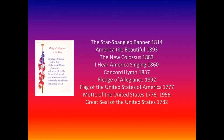The phrase 'under God' was added to the pledge by another act of Congress on June 14, 1954. Upon signing the legislation, President Dwight D. Eisenhower said, 'In this way we are reaffirming the transcendence of religious faith in America's heritage and future. In this way we shall constantly strengthen those spiritual weapons which forever will be our country's most powerful resource in peace and war.' When delivering the Pledge of Allegiance, all must be standing at attention, facing the flag with the right hand over the heart. Men not in uniform should remove any non-religious headdress with their right hand and hold it at the left shoulder, the hand being over the heart. Those in uniform should remain silent, face the flag, and render the military salute.